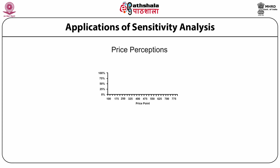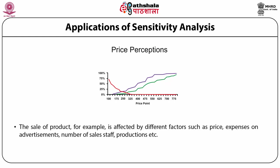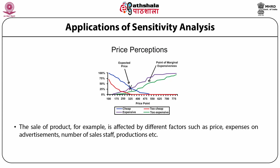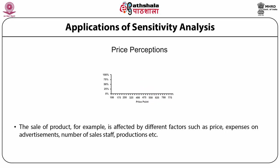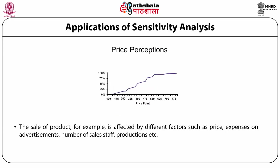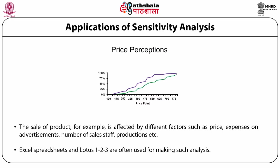Through a cause-effect analysis technique, sensitivity can be used to support the filtering of unsolicited data to reduce the communication and computational capabilities of a standard supervisory control and data acquisition system. During the analysis, the value of one variable is changed repeatedly and the resulting changes on other variables are observed. For example, the sale of a product is affected by different factors such as price, expenses on advertisements, number of sales staff, and production. Using the sensitivity model, the price of a product can be changed — increased or decreased repeatedly — to ascertain the sensitivity of different factors and their effect on sales volume. Excel spreadsheets and Lotus 1-2-3 are often used for making such analysis.